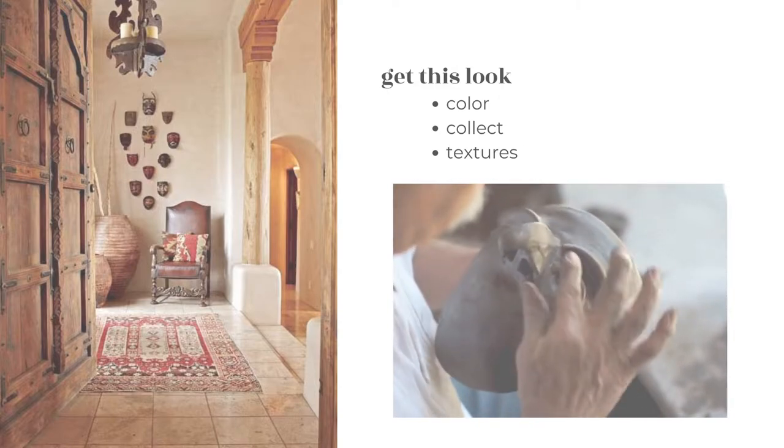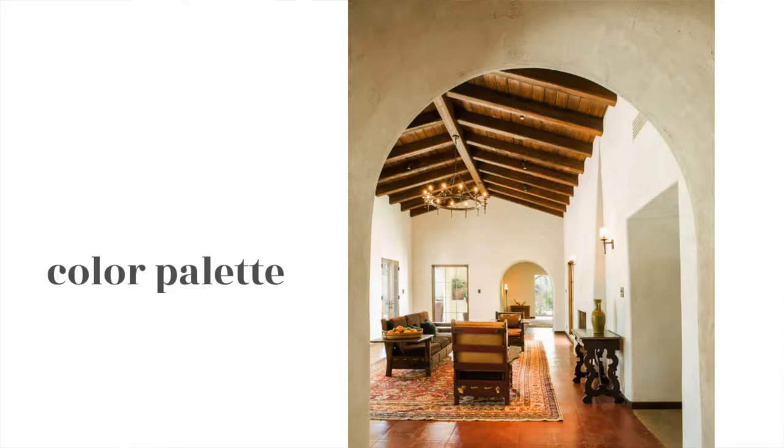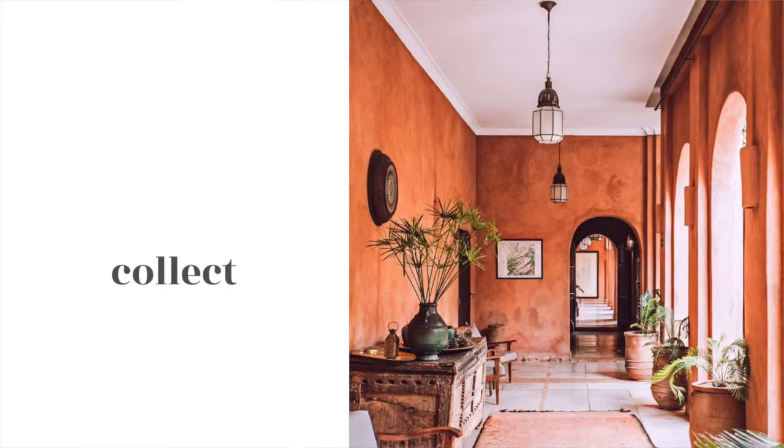Now for three ways to bring this style into your home. My first suggestion is to nail down the color palette. There really is a signature palette here: brown tones, orangey rust colors, terracotta, and touches of green. Starting with a neutral base and layering in those colors will go a long way in establishing this design style in your home.